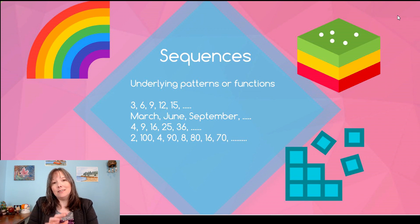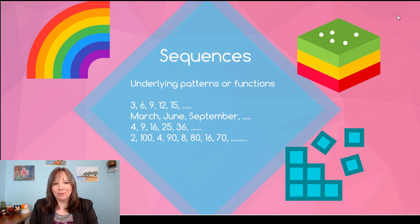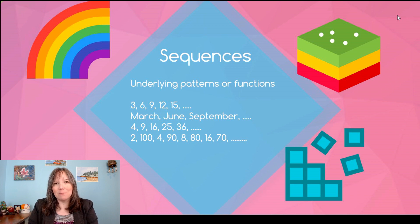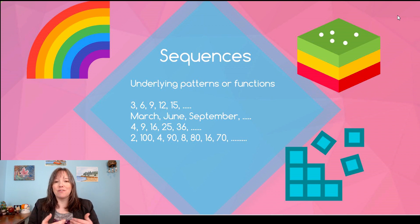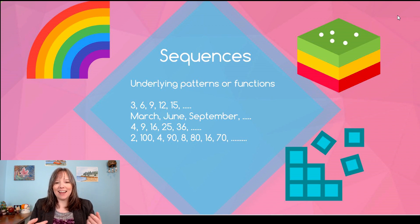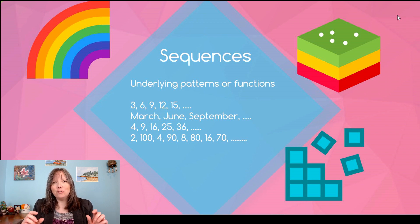Another type of problem we can solve is sequences. This is less language-based and usually much more mathematically based — understanding patterns or functions in a sequence. We can do basic sequences like skip counting: if I skip count by threes, three, six, nine, twelve, fifteen, eighteen, twenty-one, and so on. We can also do squares or cubes of numbers. Sequences can actually involve two different functions at once. For example: 2, 100, 4, 90, 8, 80, 16, 70 may not be readily apparent, but if you split the sequence into two separate alternating functions, you might be able to detect what comes next.